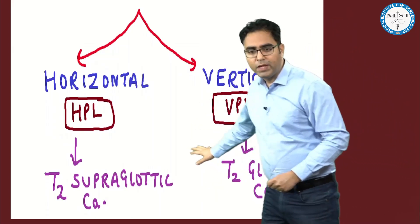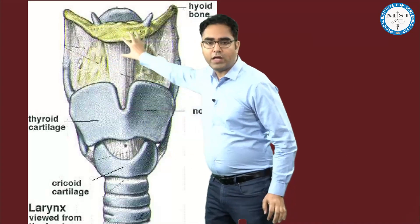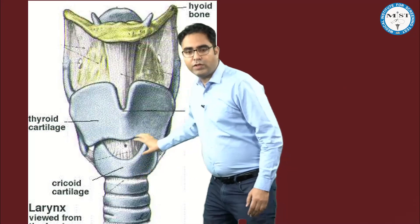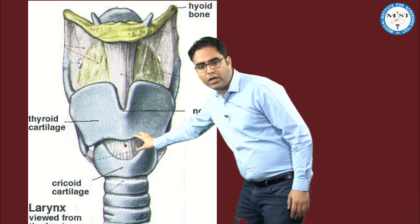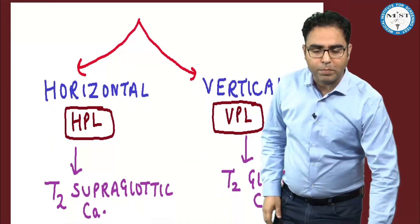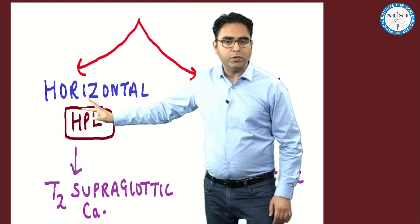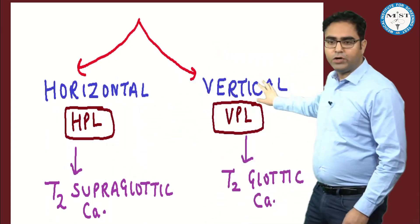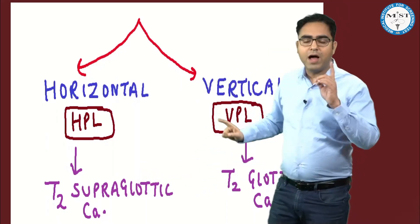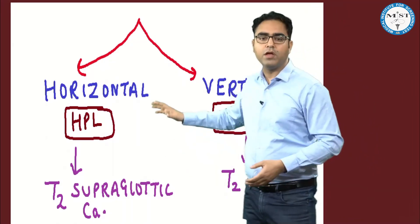The prerequisite of vertical partial laryngectomy is that the growth should be involving one hemi-larynx only. For horizontal partial laryngectomy — when the growth is in the supraglottic area, you cut horizontally, remove the supraglottic part and save the rest. For vertical partial — when the growth is on one vocal cord on one side only (T2 glottic), you cut vertically, remove that half and save the rest. For both, the main prerequisite is normal lung function. Radiotherapy remains the primary treatment for T2; partial laryngectomy is the second option if radiotherapy is not in the choices.